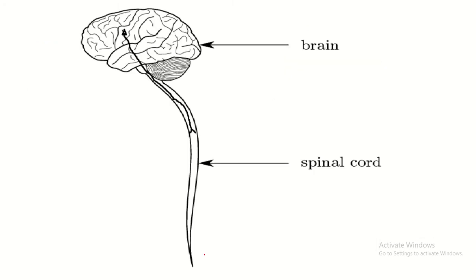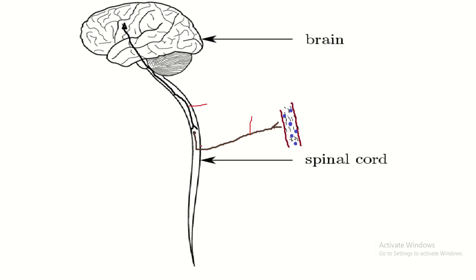What is a tract? A tract is a collection of axons within the central nervous system, and a collection of axons outside the central nervous system is known as a nerve. So this is a nerve, and this is a tract.